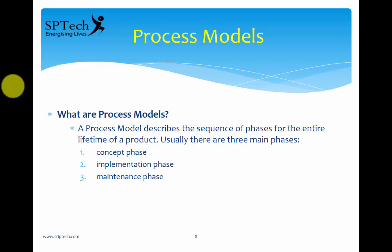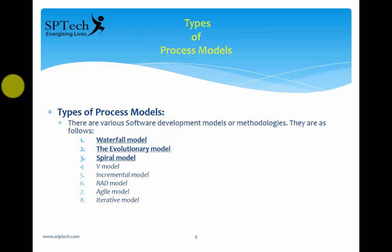Based upon the process we have seen, there are various types of process models that have been proposed. There are many types, and I have given eight types here: the waterfall model, the evolutionary model, the spiral model, the V model, the incremental model, the RAD model (rapid application development), the agile model, and the iterative model. We will only be focusing on the waterfall model, the evolutionary model, and the spiral model, as these three are in your curriculum.